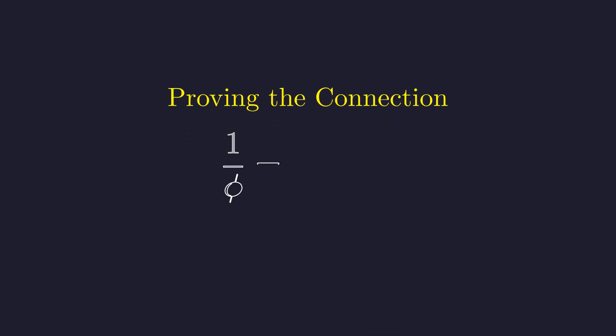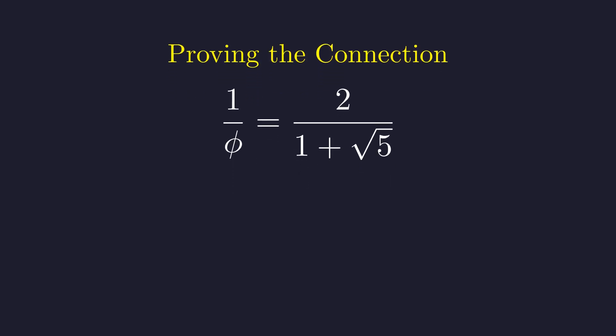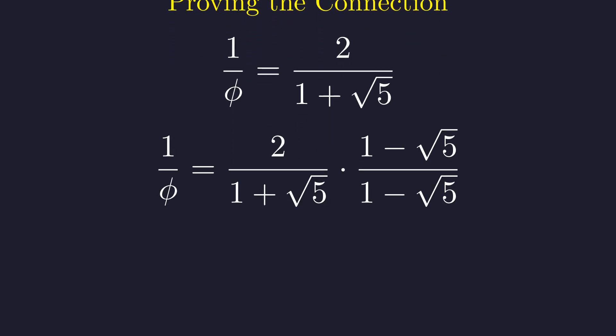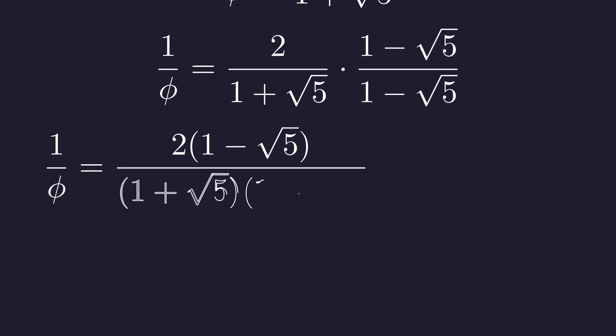Let's prove this relationship rigorously. Let's start by writing out the reciprocal of phi as a fraction. We want to transform this expression to match our value of y. To rationalize the denominator, we multiply both numerator and denominator by the conjugate of the denominator: 1 minus the square root of 5. In the denominator, we get the difference of squares formula: a plus b times a minus b equals a squared minus b squared.